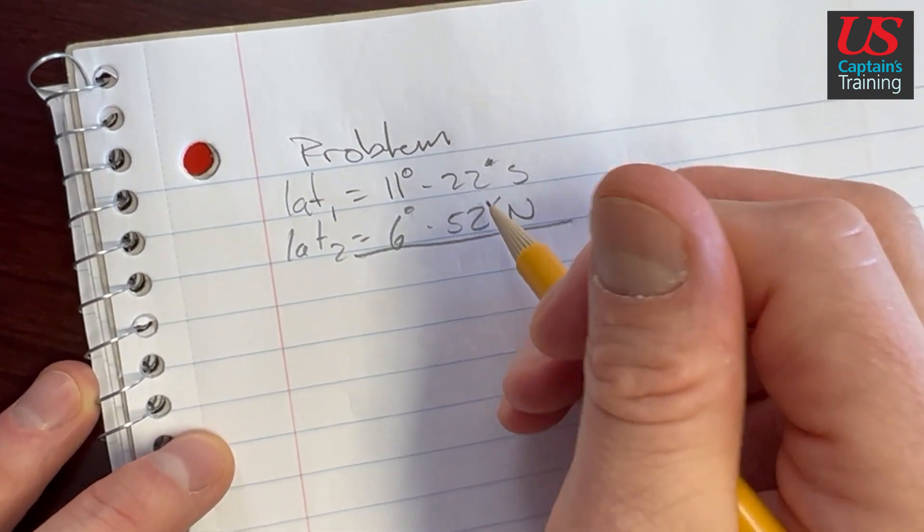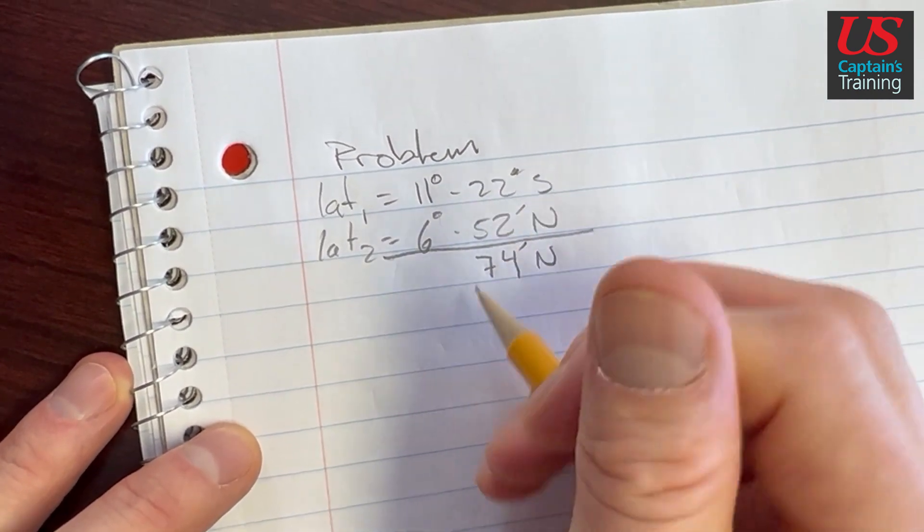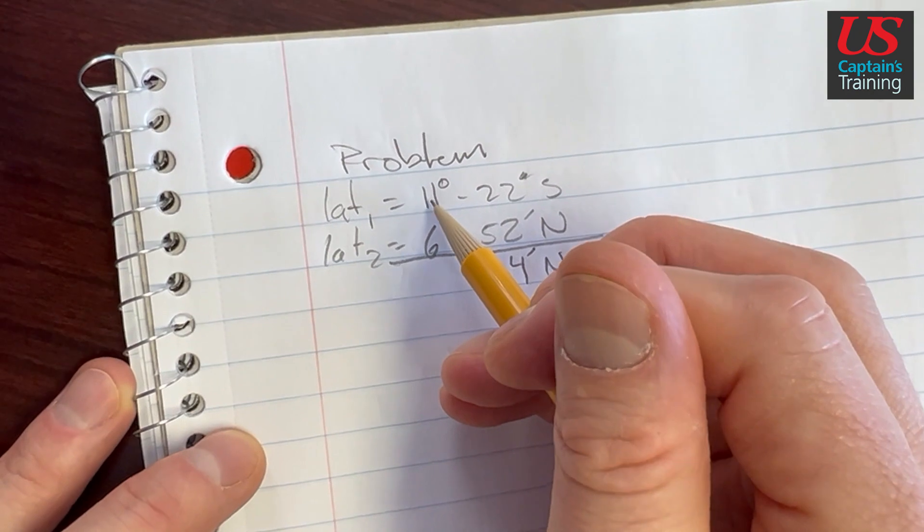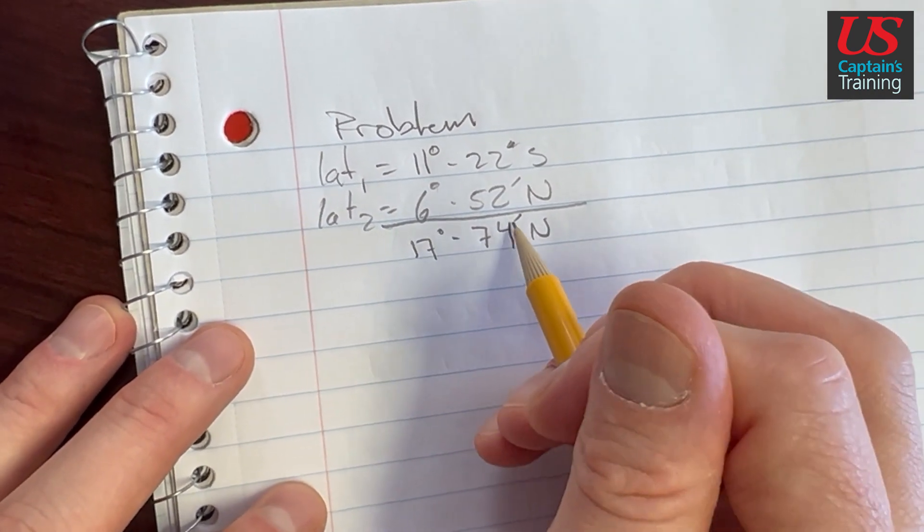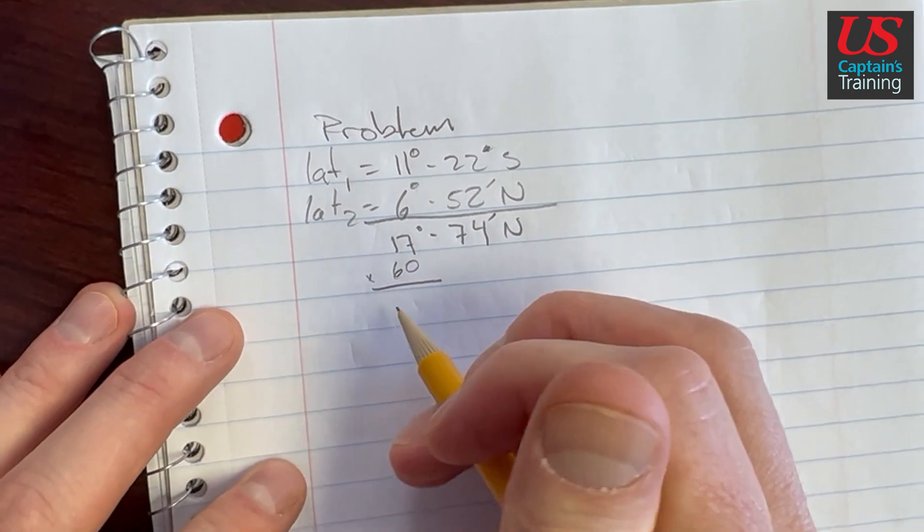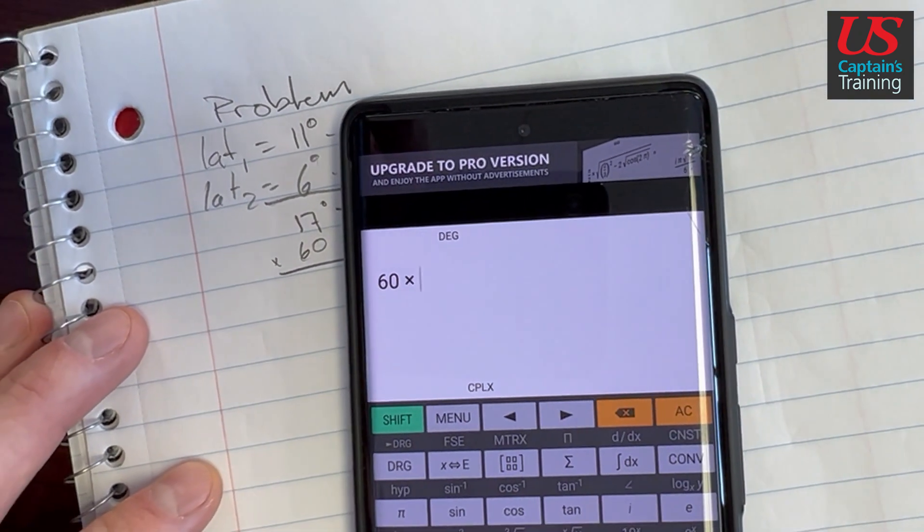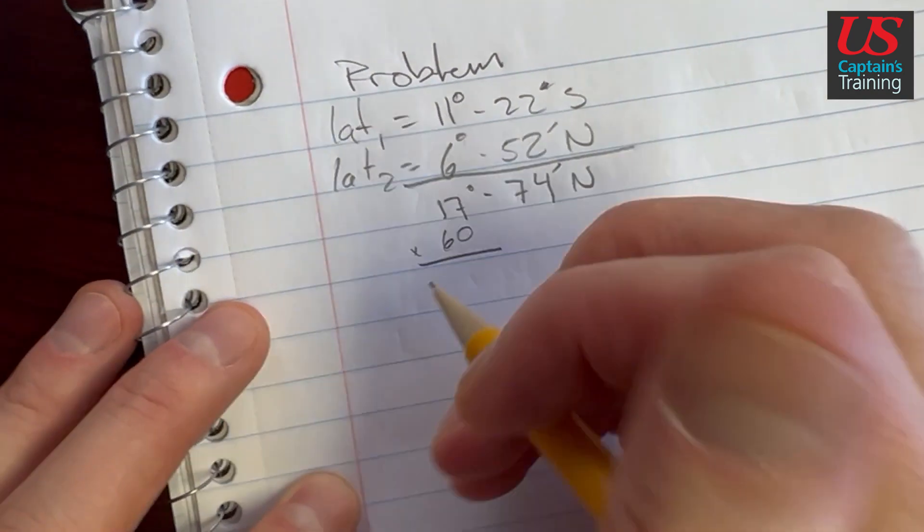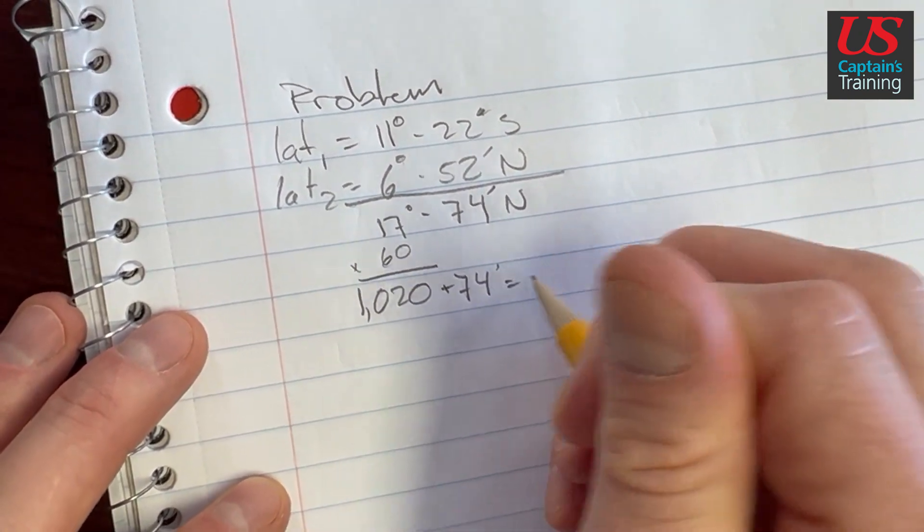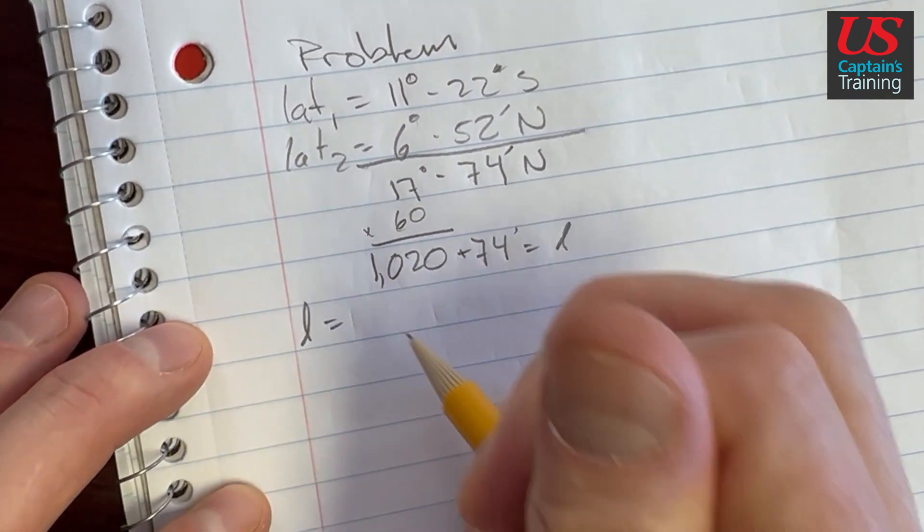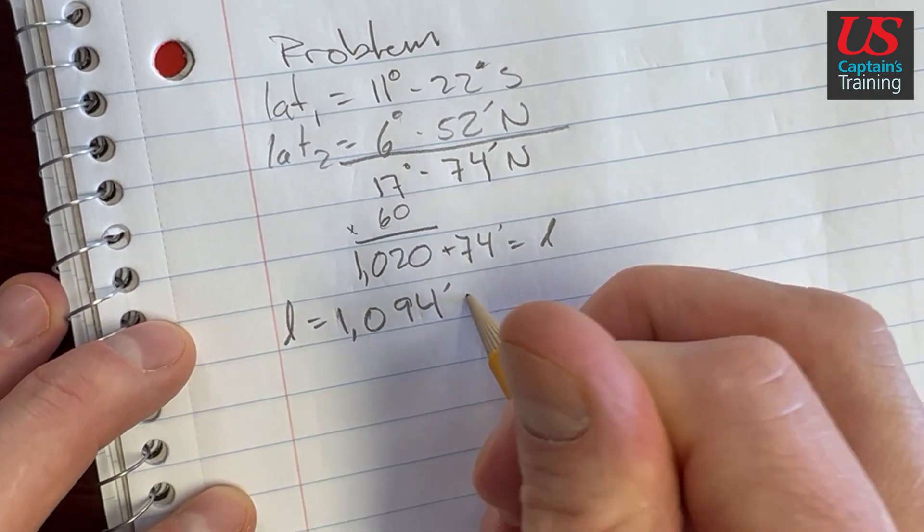We have to add these together. So we're going north and we have to add these. 2 and 2 is 4, 2 and 5 is 7, right? 74 minutes north. And then we'll add these. 11 and 6, that's 17 degrees 74 minutes. We're just going to put this all into minutes. So times by 60 will get us to minutes. 60 times 17 equals 1,020, and then we'll add these 74 minutes. And this will equal little l. So little l equals 1,094 minutes north.